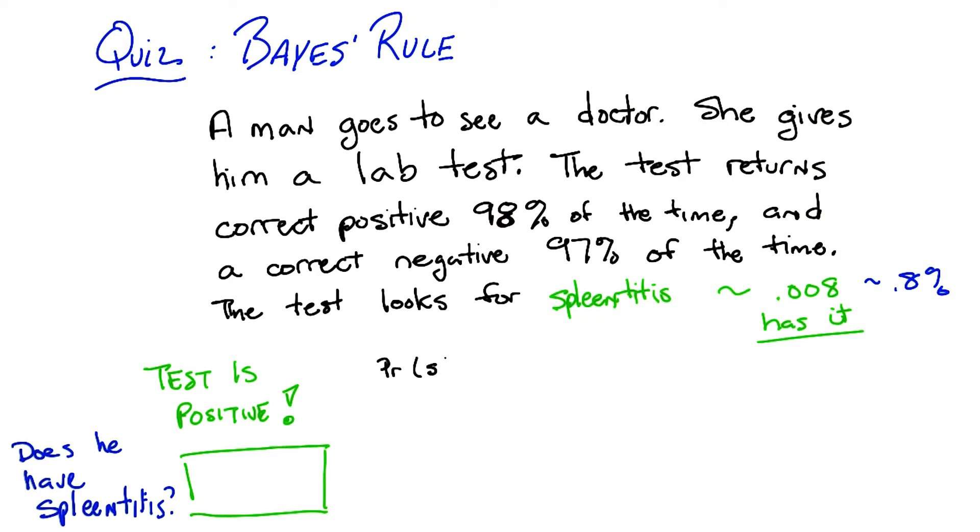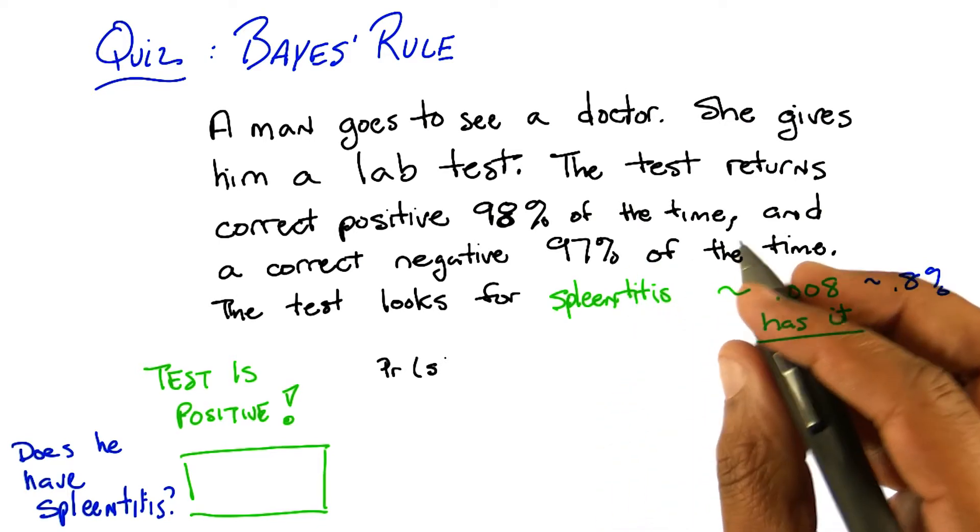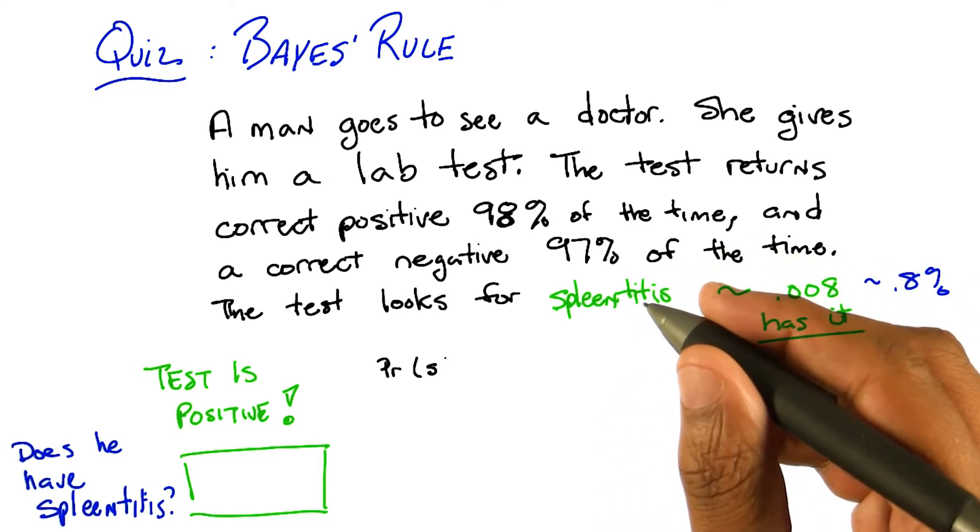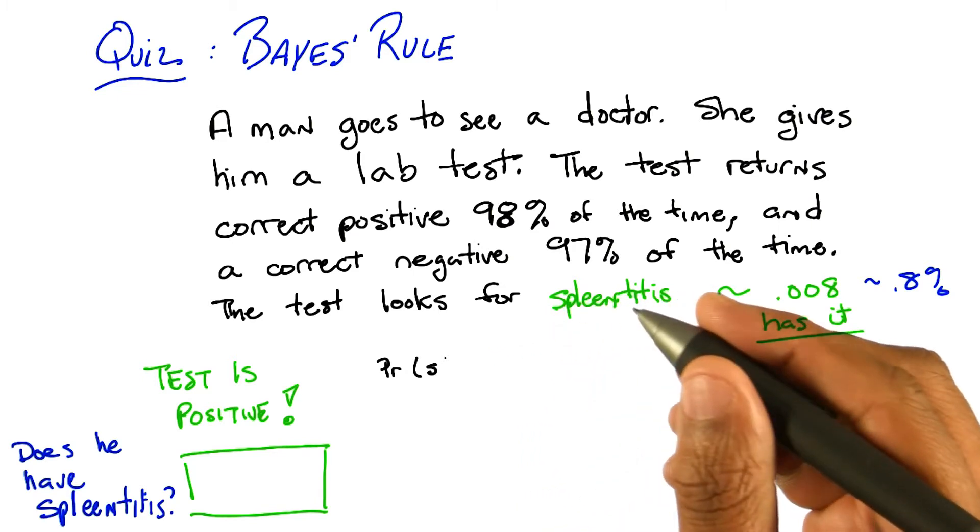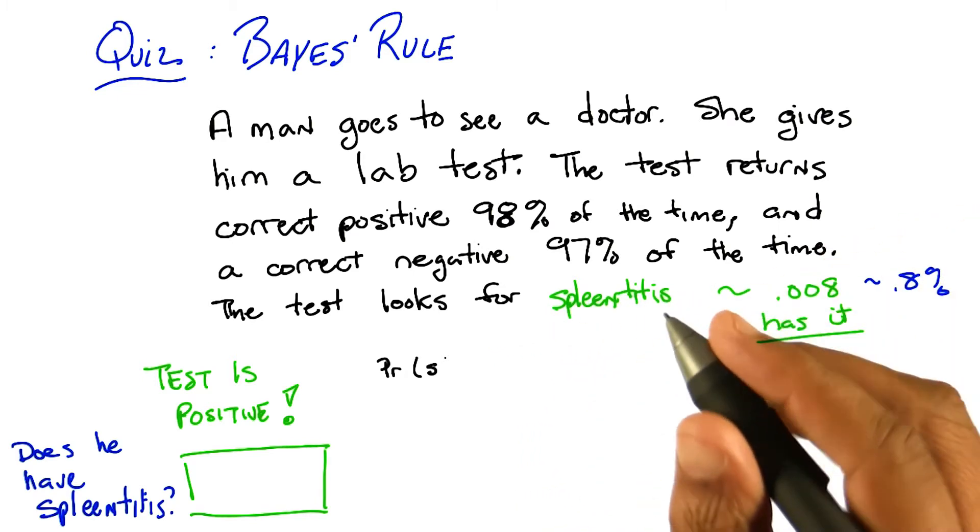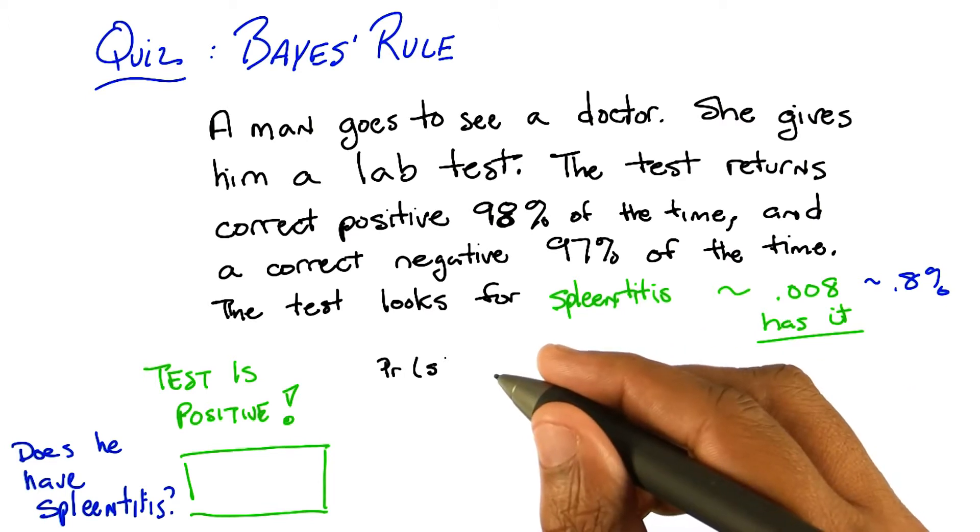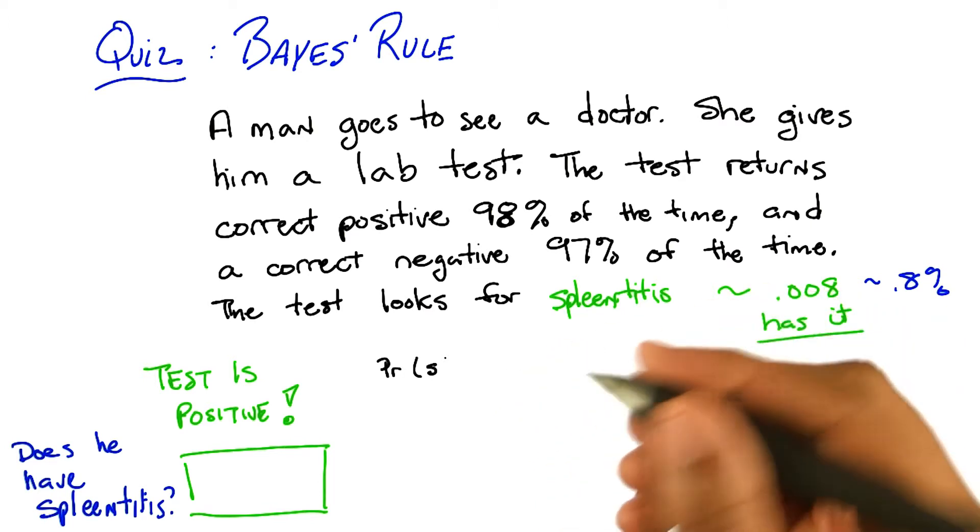So, apologies to anyone out there with splenitis. But this is spleen-titus, which is really totally different. Is splenitis a real thing? Yeah. Really, what is it? Enlargement and inflammation of the spleen, as a result of infection, or possibly a parasite infestation, or cysts. So, what you're saying is, that's gross and we don't want to think about it. Okay, good.